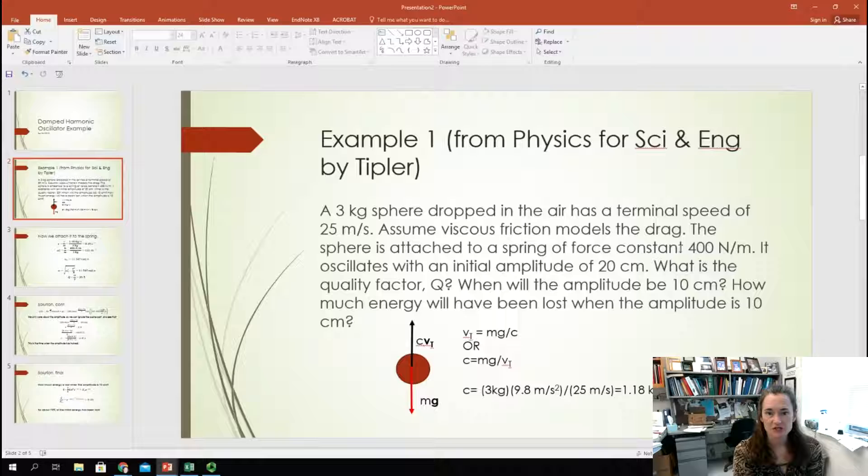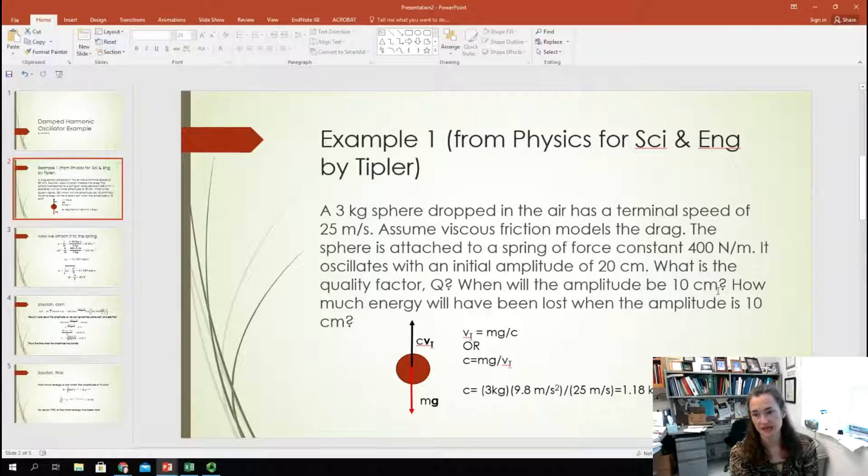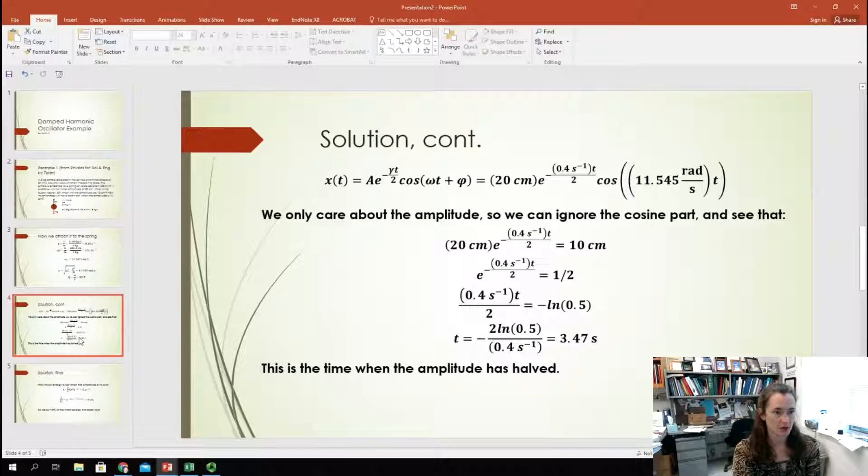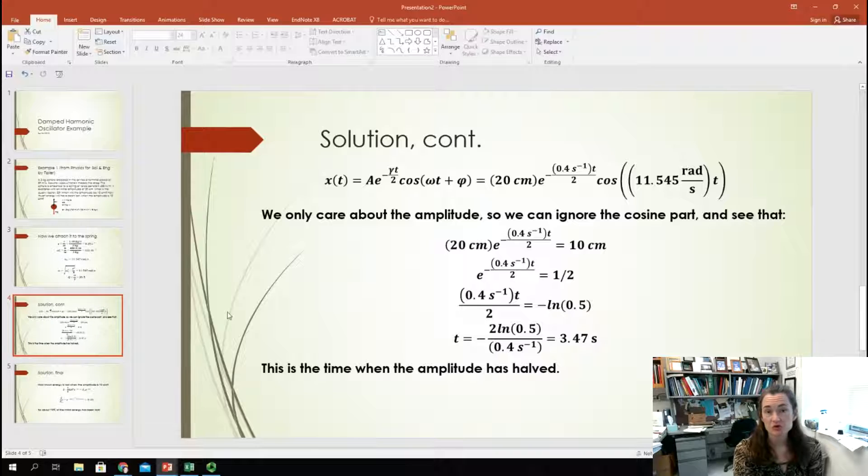Now, the next part of the question said, it oscillates with an initial amplitude of 20 centimeters. What's the quality factor? When will the amplitude be 10 centimeters? Okay? So, this is the decay of the amplitude. Alright. So, remember that for damped harmonic oscillators, we describe the motion, x of t, as A e^(-gamma*t/2) cosine(omega*t + phi).